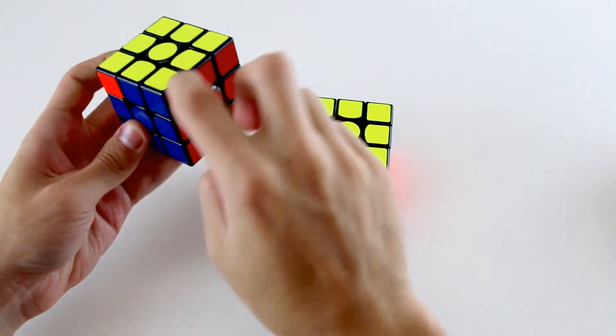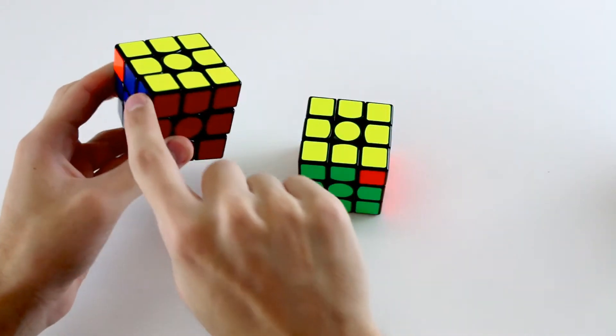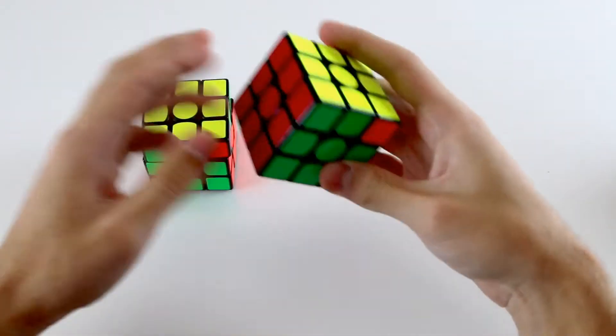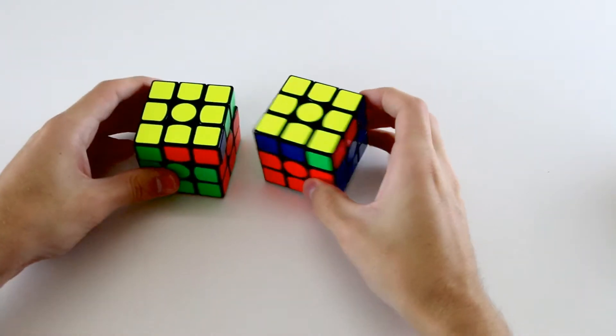If, for example, we have a three piece block plus another corner, so a four piece block, that means we just have one of the two possible J permutations.